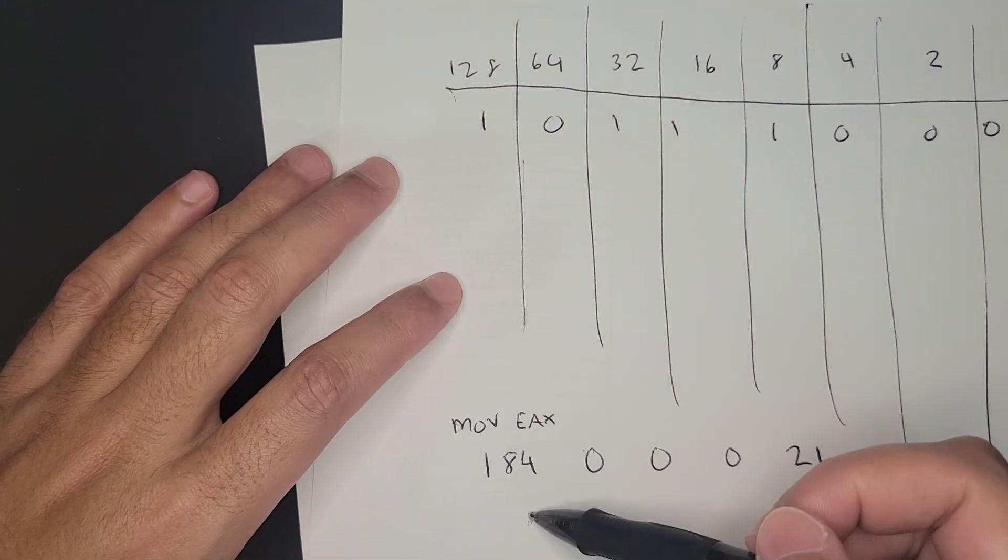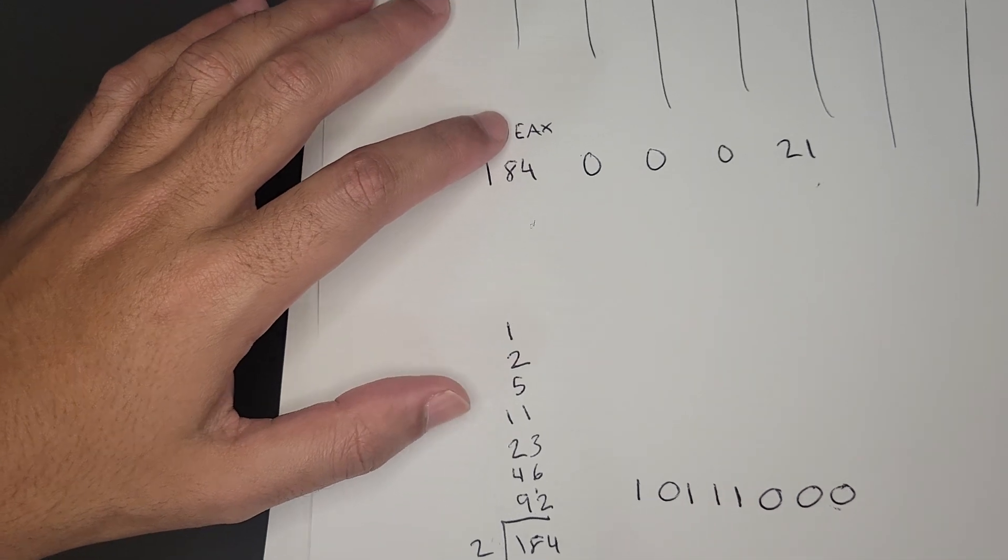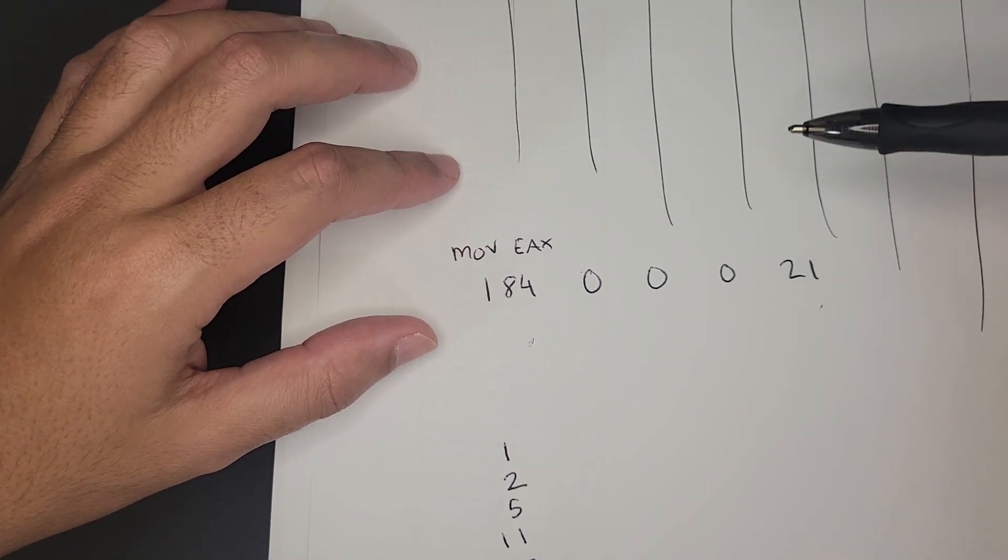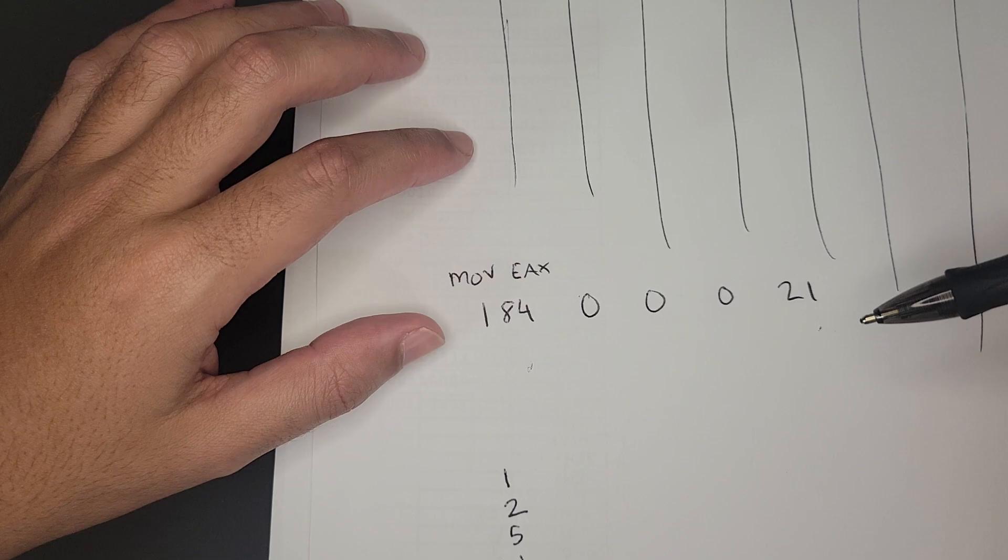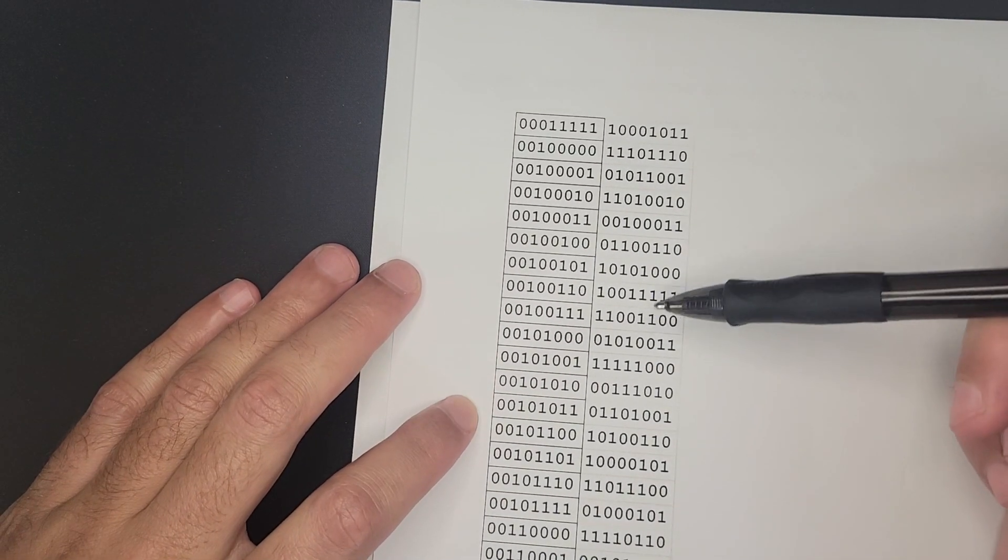So this is obviously not a very practical approach to do this. It doesn't quite make sense. So the question is, how do we represent binary numbers in a way that's very easy and reliable? And the answer is hexadecimal.